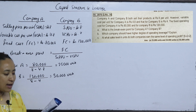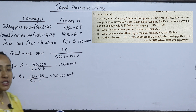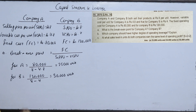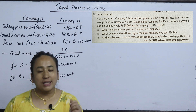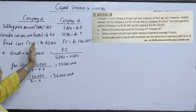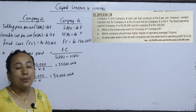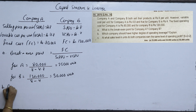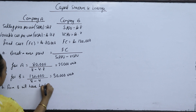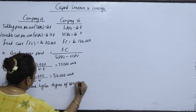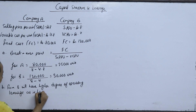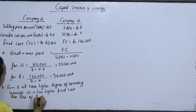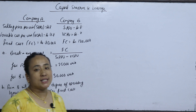Which company should have a higher degree of operating leverage? Operating leverage is a measure of operating risk. The rule is: the company with higher fixed cost will have a higher degree of operating leverage (DOL). Therefore, Firm B will have a higher degree of operating leverage as it has higher fixed cost (Rs.1,20,000) than that of Firm A (Rs.80,000).